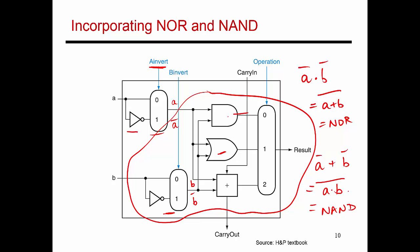By setting the bits appropriately, I can have the circuit perform OR, AND, addition, subtraction, NOR, as well as NAND. Which operation is performed is determined entirely by the operation code as well as the values for A invert and B invert. In a subsequent slide and the next video, I'll go over the exact values for each one of these bits that determines the result that comes out of this ALU.